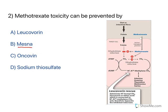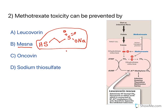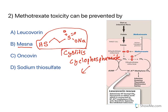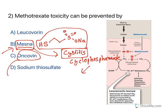Mesna — every letter stands for something: M = Mercapto, E = Ethyl, S = Sulfonyl, Na = Sodium. Mesna is used to treat cystitis caused by cyclophosphamide. Cyclophosphamide is an anti-neoplastic agent that releases toxic metabolites which cause cystitis. Mesna neutralizes those toxic metabolites. Oncovorin is Vincristine — a plant-related product used to treat cancer. Sodium thiosulfate is used to treat cyanide poisoning. So for this question, the answer is Leucovorin.